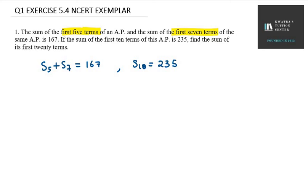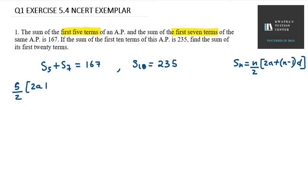Now we write the value of S5 using the formula: Sn = n/2 × (2a + (n−1)d). Applying this, S5 = 5/2 × (2a + 4d), and S7 = 7/2 × (2a + 6d). Setting S5 + S7 = 167 gives us equation number one.